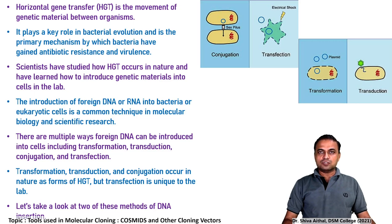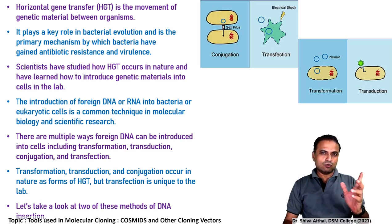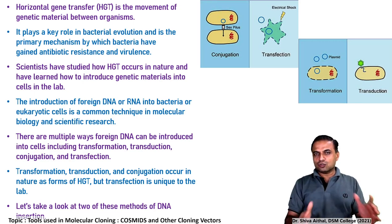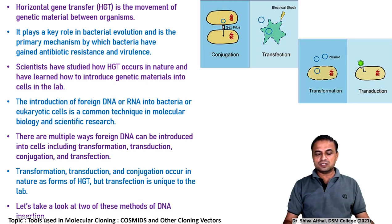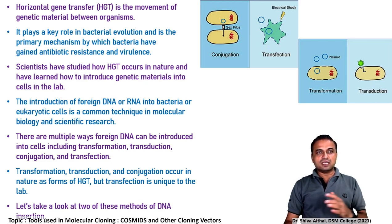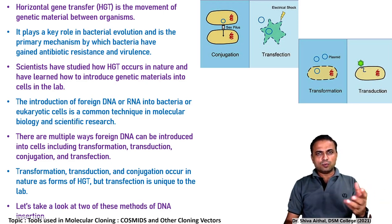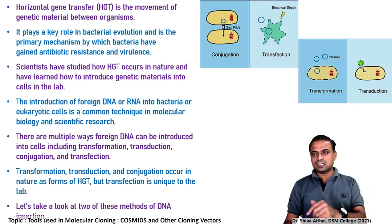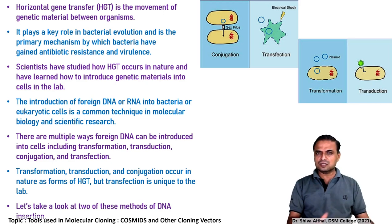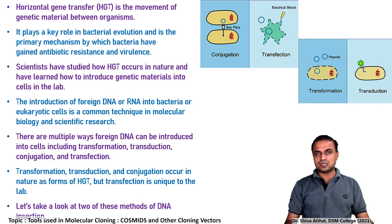Before venturing into these artificial techniques, let us see how or from where this idea came from. There is a natural method in bacteria where across the species they transfer their genetic material, and that is called horizontal gene transfer. When you talk about conjugation, transformation, or transduction, these are classical natural methods of horizontal gene transfer.